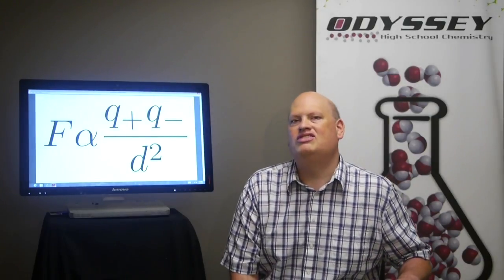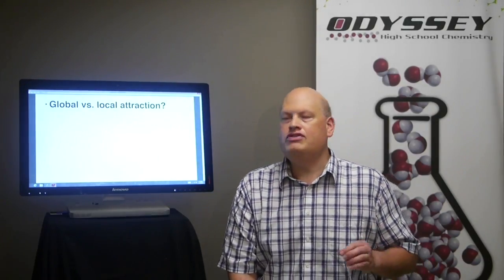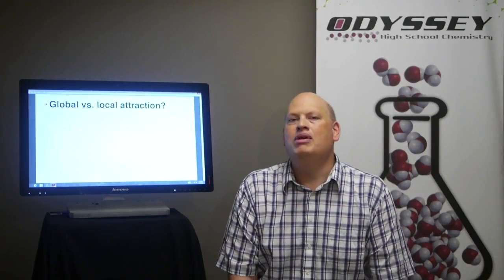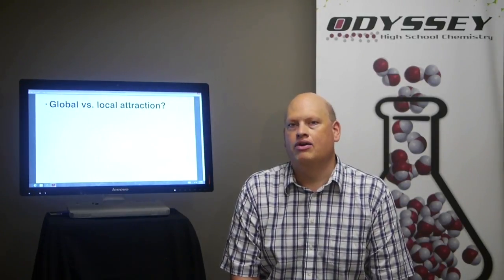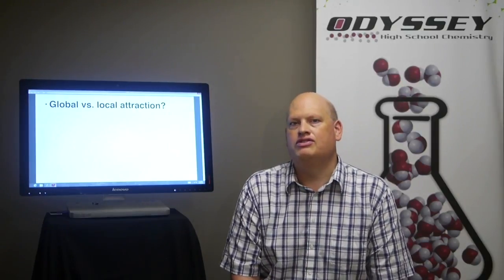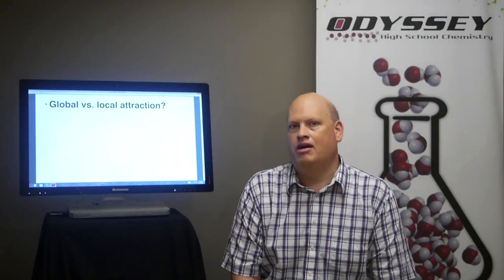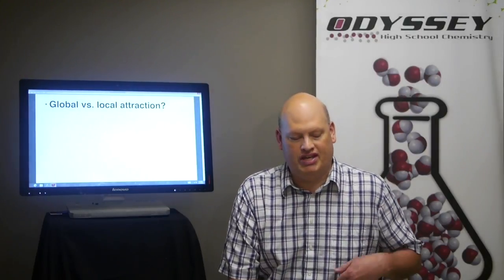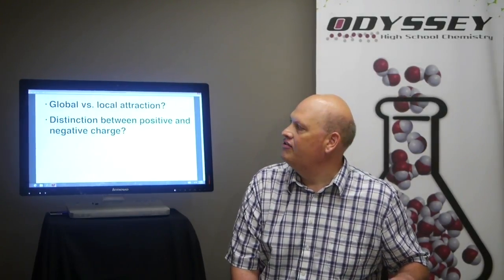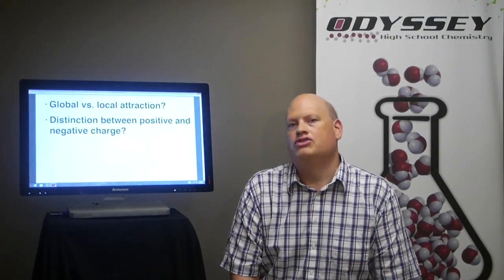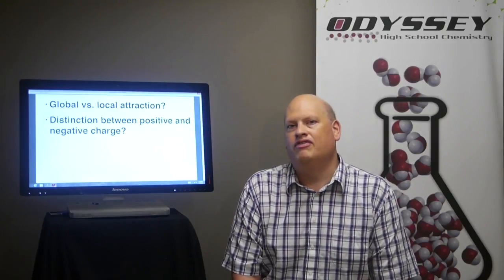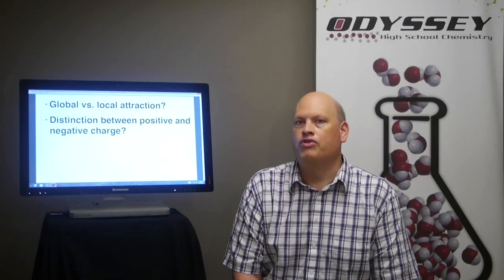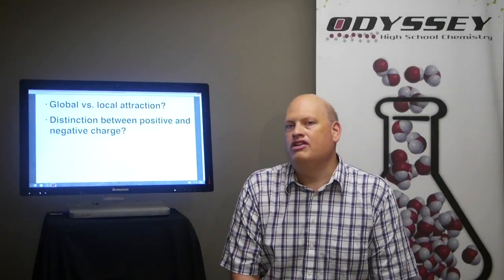We typically see several misconceptions students have. The first involves global versus local attraction. Many students think that when you have many ions in a system, they only attract one another in pairs. They don't understand that if there are ten ions in a system, one ion will be attracted or repelled by all the other nine ions at the same time. It's very hard without visualization to understand that. A second common misconception students have is the distinction between positive and negative charge — students believe that simply by looking at a particle and its interactions, we can understand if the particles are positive, negative, or a mixture.